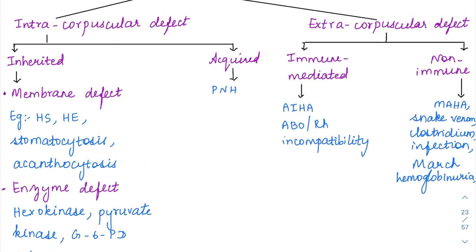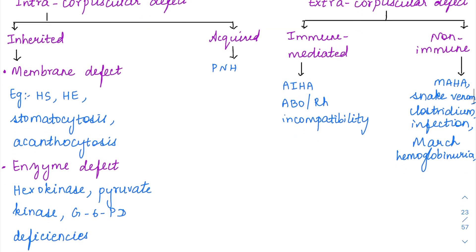Under extracorpuscular defects, the RBCs can either be killed by an immune-mediated mechanism, like in autoimmune hemolytic anemia, or an Rh or ABO incompatibility transfusion reaction. Or it could be a non-immune kind of extracorpuscular defect like mechanical damage to the RBC — either a microangiopathic hemolytic anemia or march hemoglobinuria.